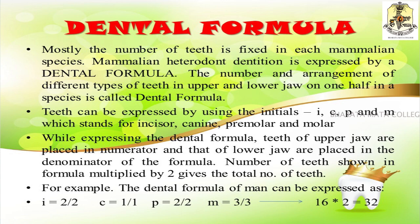Coming to the dental formula: the number of teeth is fixed in each mammalian species. The mammalian heterodont condition is expressed by the dental formula — that is, the number and arrangement of each type of teeth in the upper and lower jaw of each species. It is expressed using the initials I, C, P, and M, which stand for incisor, canine, premolar, and molar. The teeth of the upper jaw are written in the numerator and those of the lower jaw in the denominator. The number of teeth shown in the formula is multiplied by two to give the total number of teeth.